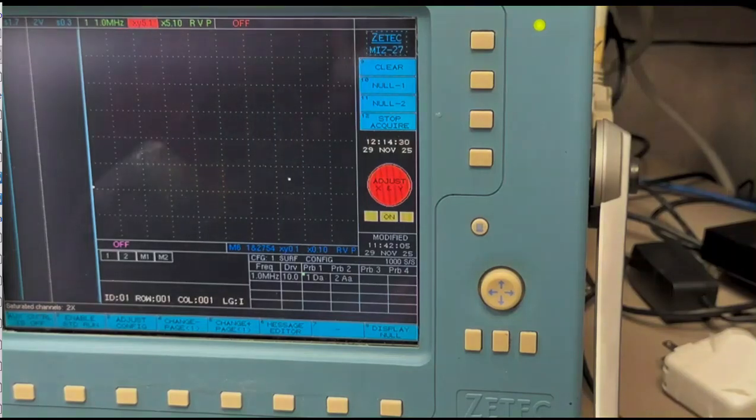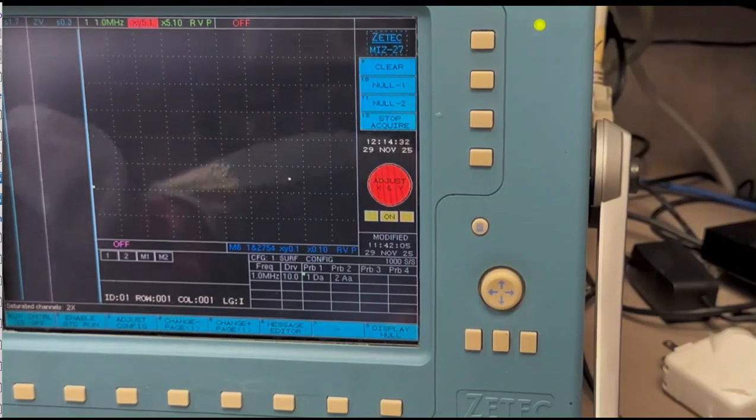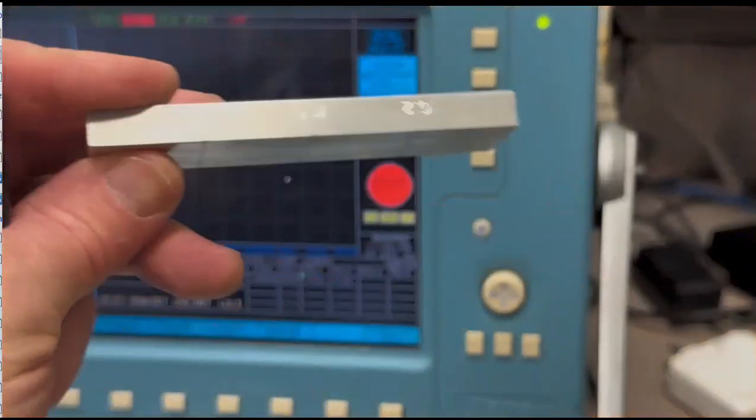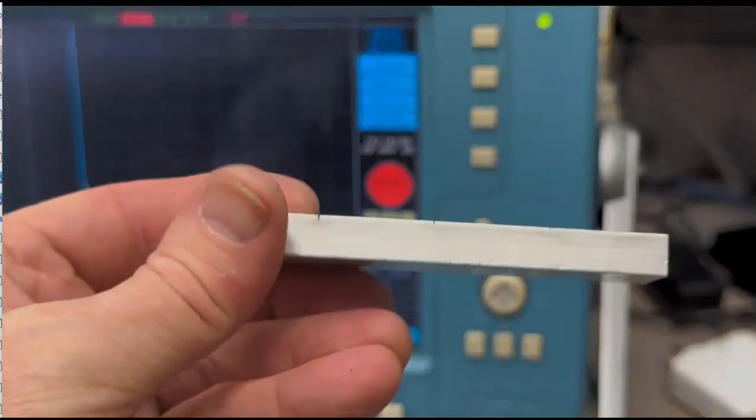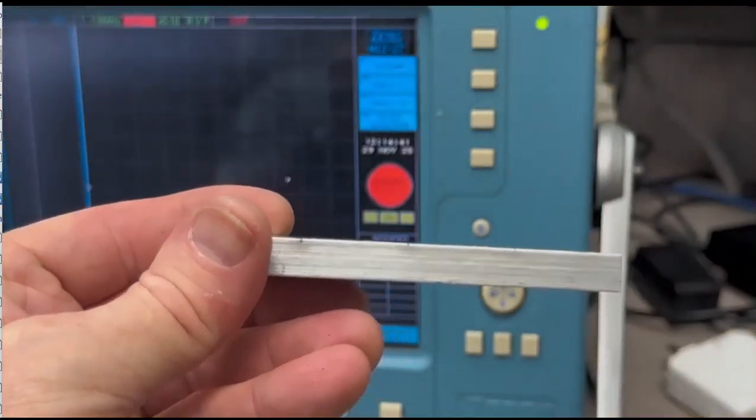So keeping that in mind, it's always helpful when you can see it on a tester, right? So this is just an EDM block, aluminum. You can see those cracks in the side there.